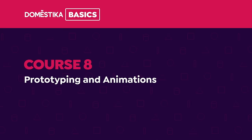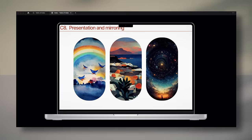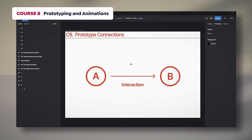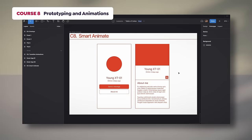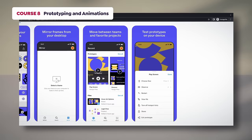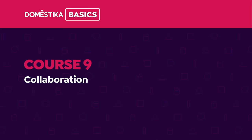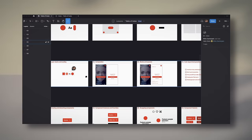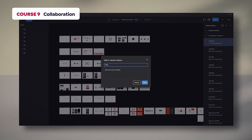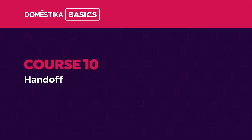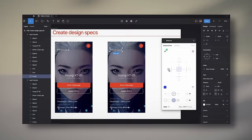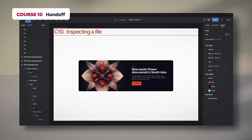The eighth course will cover prototyping. I will talk about presentations, settings, flows, and connections. We will also see how to develop animation, handle easing effects, and use the Figma mobile app. In the ninth course, we will explore project sharing options, comments, and accessing version history. In the tenth and final course, we will address handoff functionalities, like documenting the design, inspecting a file, and exporting information.